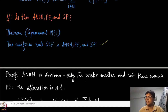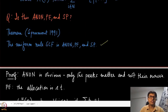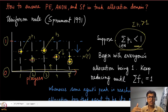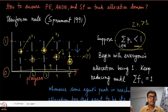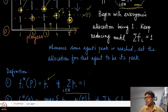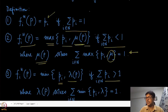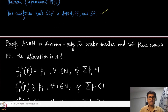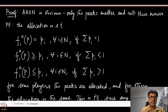Now let us argue why the uniform rule is anonymous, Pareto efficient, and strategy-proof — it satisfies all three properties, as per Sprumont's theorem. Anonymity is easy to see: if you change the names of the agents in the figure, their allocations would change accordingly. The thread or water level is not tied to any agent's identity — it only depends on the set of peaks — so the mechanism is completely agnostic of agent names.